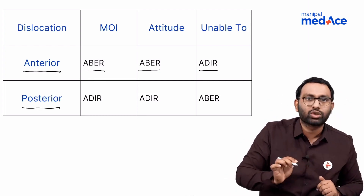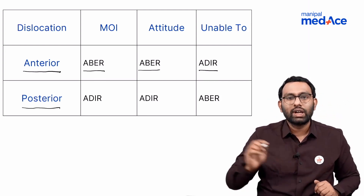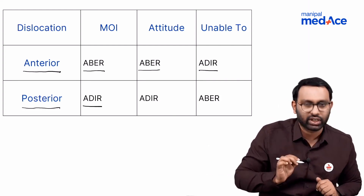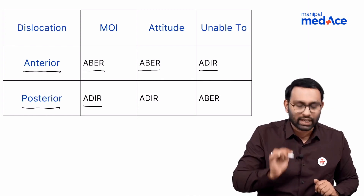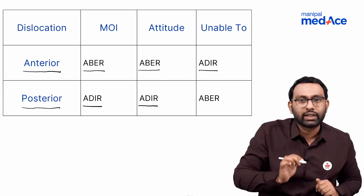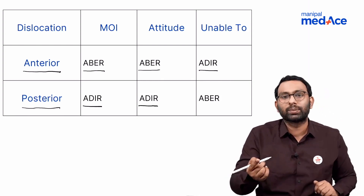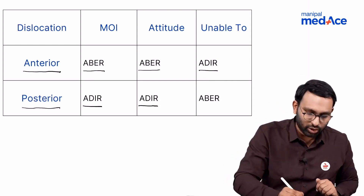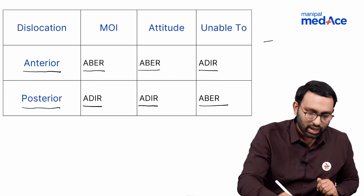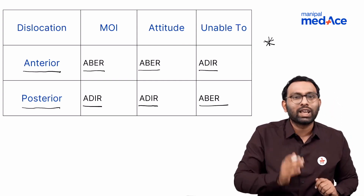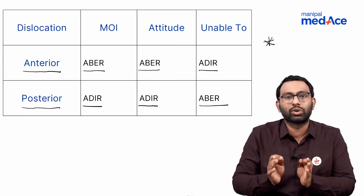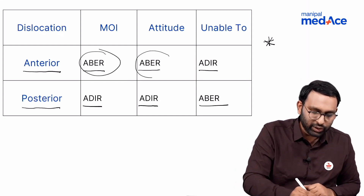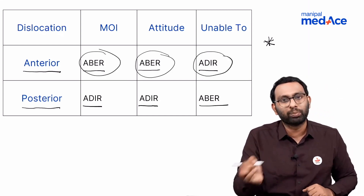For posterior dislocation, the mechanism of injury is adduction and internal rotation, so the attitude is also adduction and internal rotation. The movements not possible are the opposite — abduction and external rotation. These rules will help you solve 90% of MCQs about shoulder dislocations: mechanism of injury, attitude, and movements the patient cannot perform.